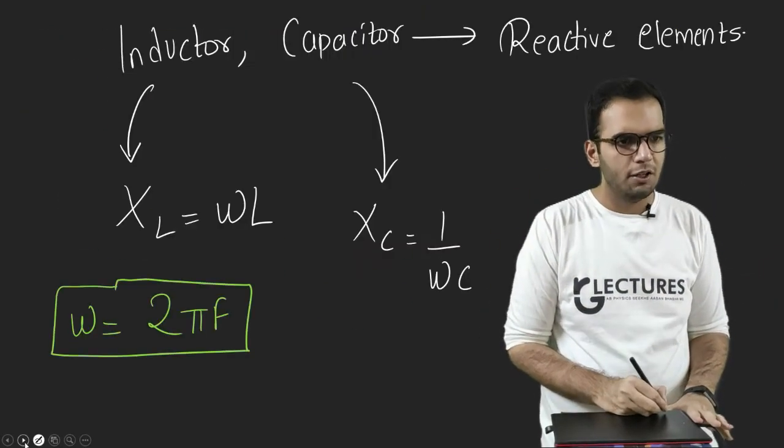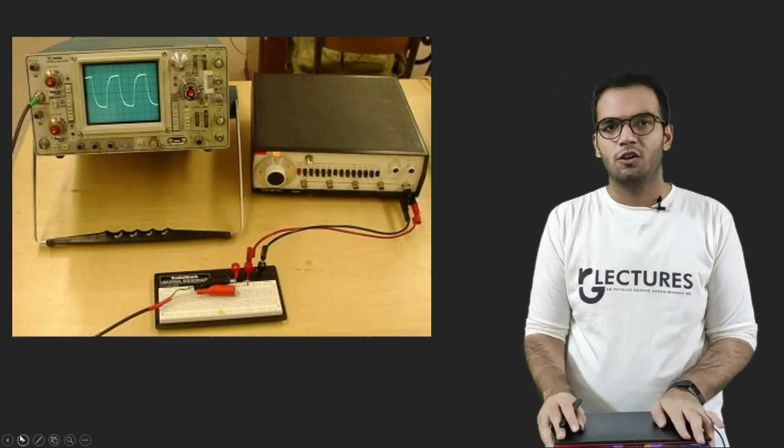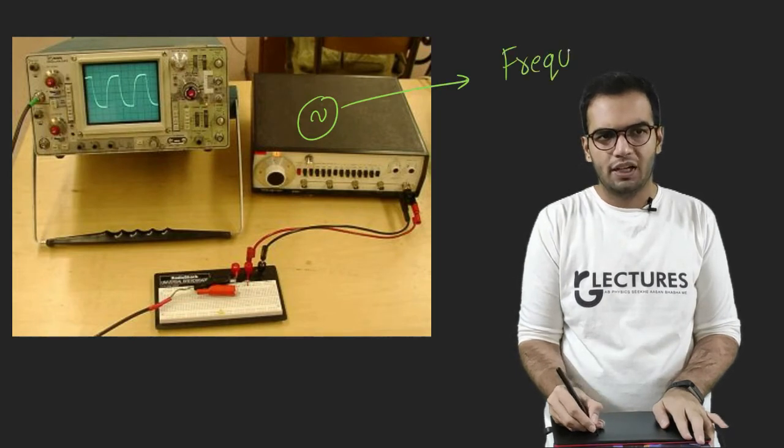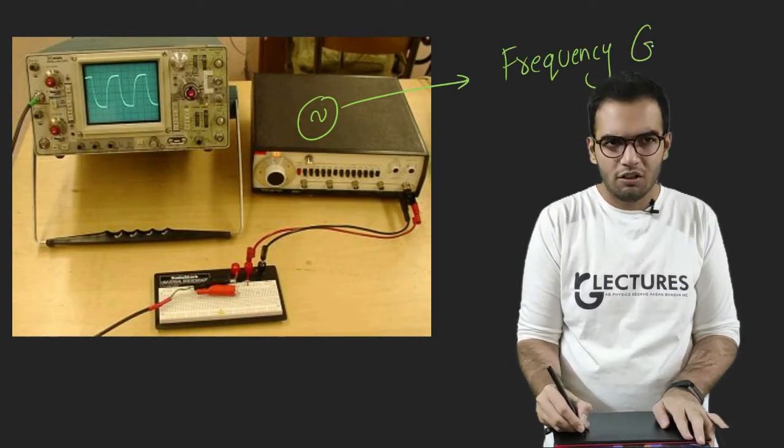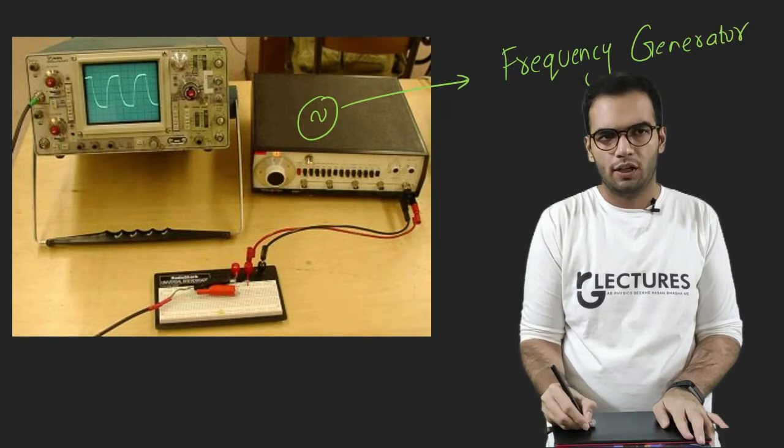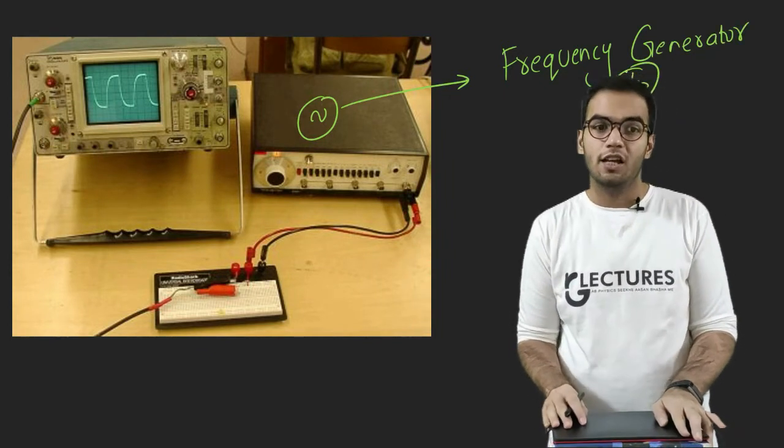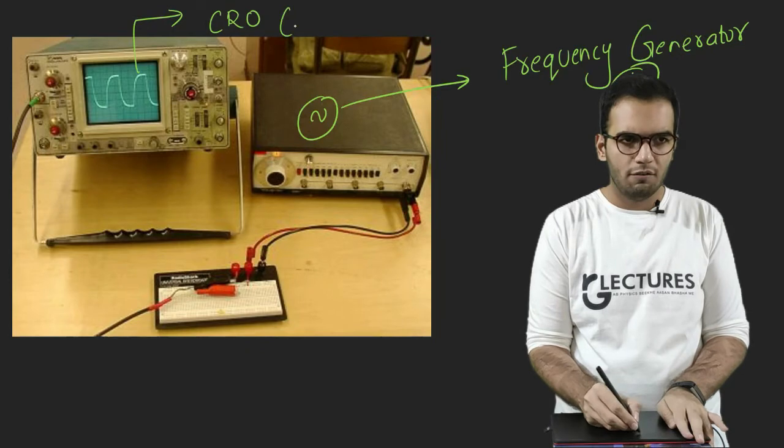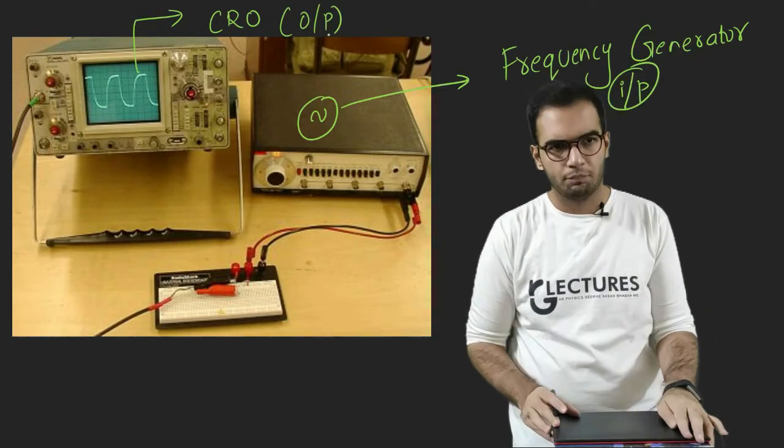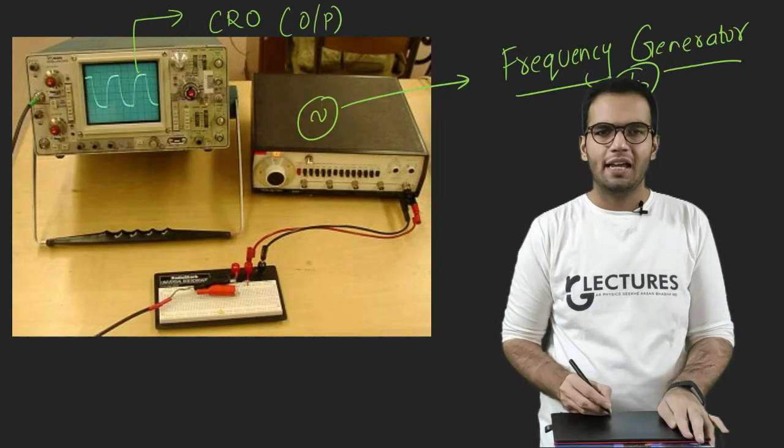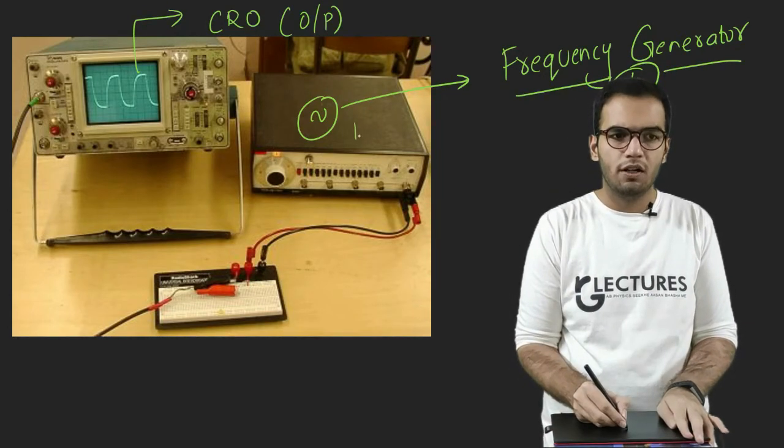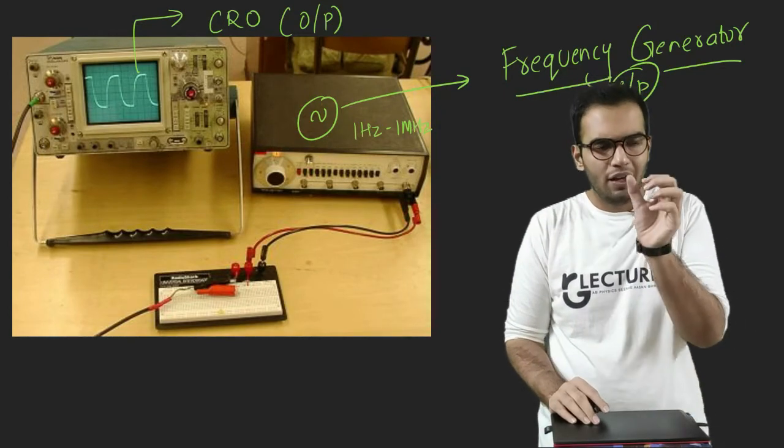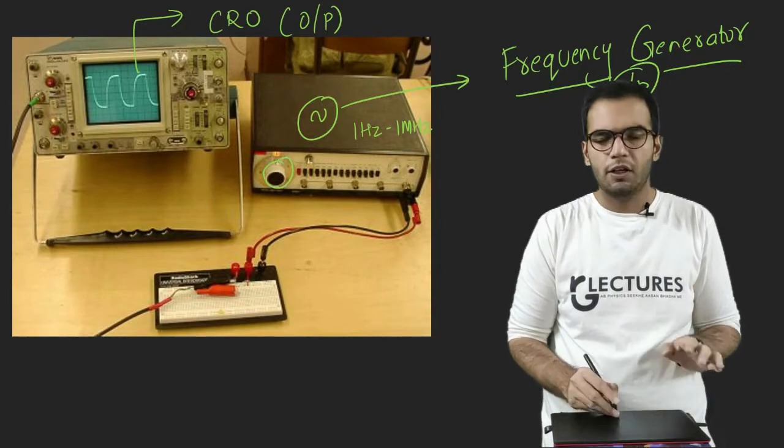But whenever we connect an AC circuit, we connect frequency generator in our input. Frequency generator is usually connected in the input side. And this device is called a CRO, cathode ray oscilloscope. This device is connected in the output. And what is the meaning of frequency generator? I can generate any frequency starting from 1 hertz till 1 megahertz. It all depends upon me. So as soon as I change this knob, the frequency will change.